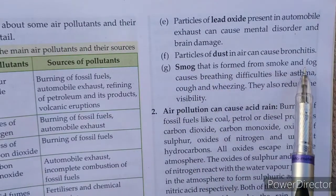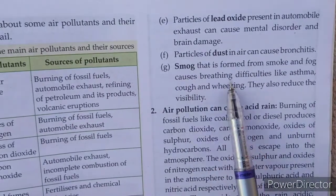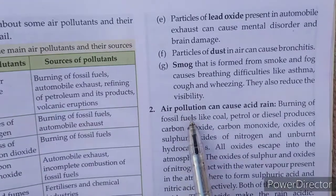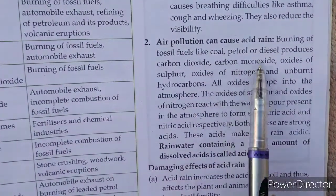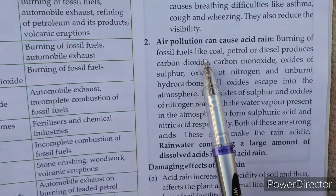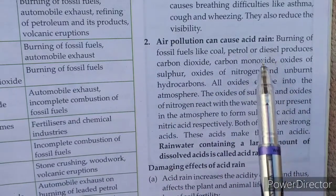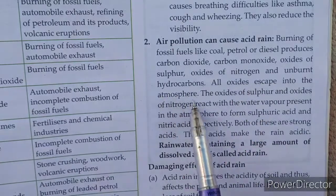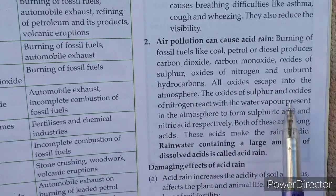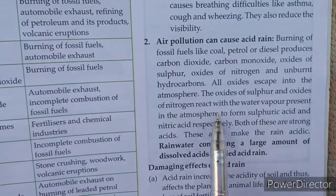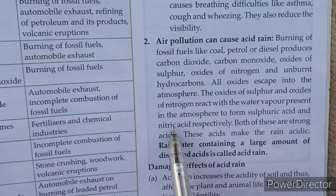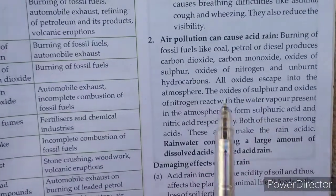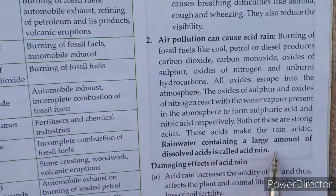Smoke combined with fog causes breathing difficulty in diseases like asthma and also reduces visibility. Air pollution can cause acid rain. Burning of fossil fuels like coal and diesel releases carbon monoxide, oxides of nitrogen and hydrocarbons. These oxides escape into the atmosphere and react with water vapour to form sulfuric acid and nitric acid, both of which are strong acids. Then the acid falls with rain, forming acid rain — water containing a large amount of dissolved acid.